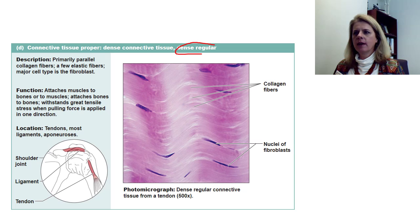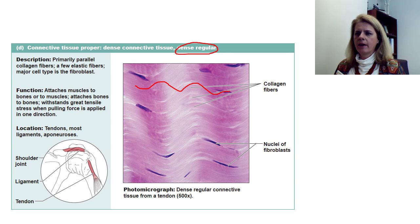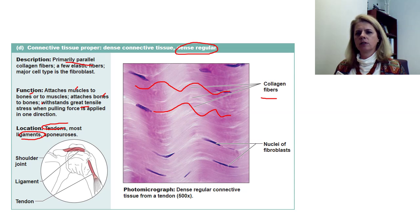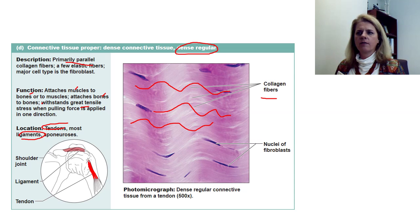Dense connective tissue includes dense regular connective tissue, which is dense and has a very regular, parallel pattern with lots of collagen fibers and not many elastic fibers. This is what attaches your muscles to bones and bones to bones — it's really strong. Think about tendons and ligaments. Because the fibers are parallel and move in one direction, joints that only move in one direction will have this type of dense regular tissue.